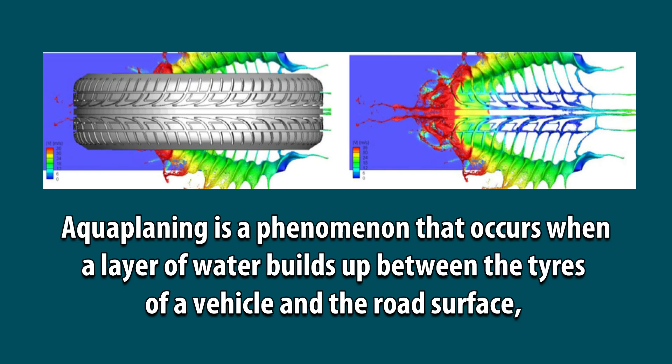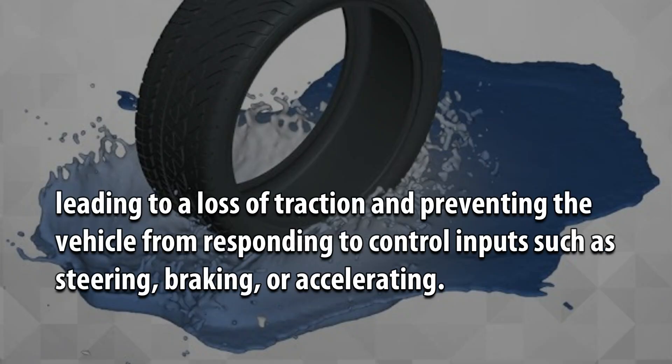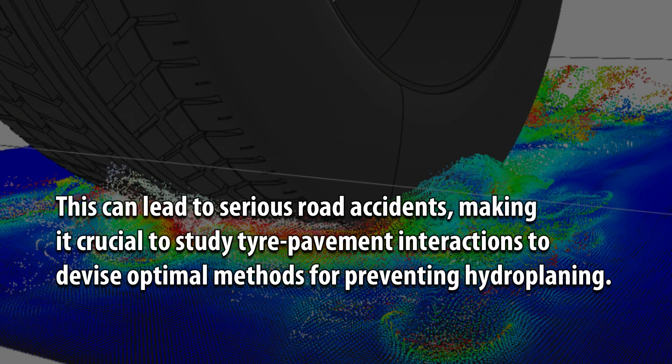Aquaplaning is a phenomenon that occurs when a layer of water builds up between the tires of a vehicle and the road surface, leading to a loss of traction and preventing the vehicle from responding to control inputs such as steering, braking, or accelerating. This can lead to serious road accidents, making it crucial to study tire pavement interactions to devise optimal methods for preventing hydroplaning.